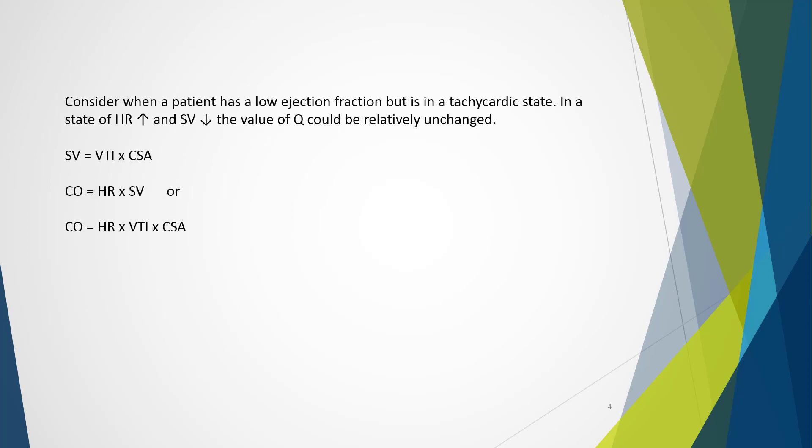In the previous lecture we discussed the basics for stroke volume and cardiac output calculations. These are important as stroke volume or effectively the left ventricular ejection fraction may not provide an accurate picture when determining heart failure. Consider when a patient has a low ejection fraction but is in a tachycardic state. In this instance we have a high heart rate and a low stroke volume, but the flow or Q could be relatively unchanged.